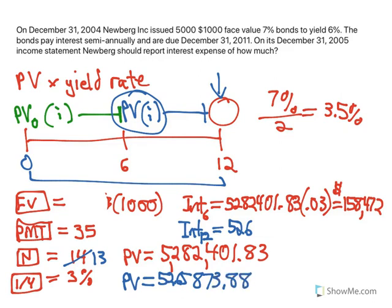So as we expect, it's gone down because it is amortizing that premium down to eventually at the end of 11 years it'll be down to 5 million to match the face value. $5,265,873.88 times 0.03, and we get $157,976.